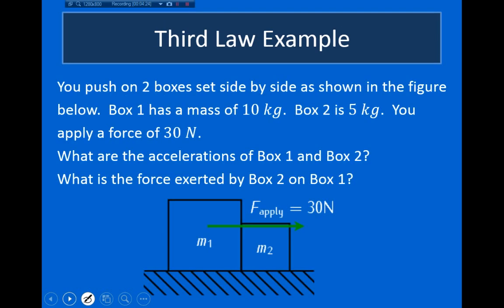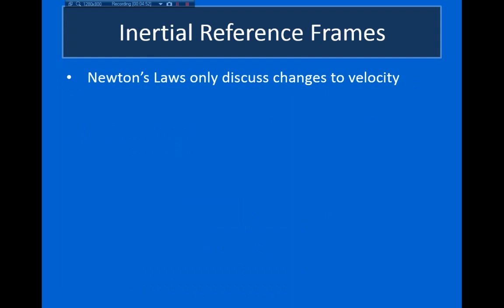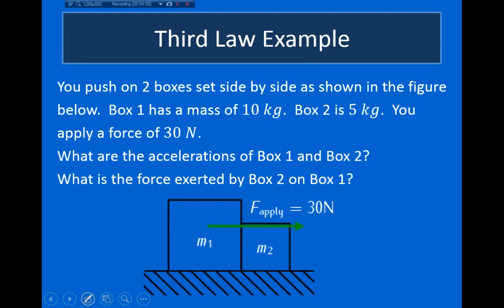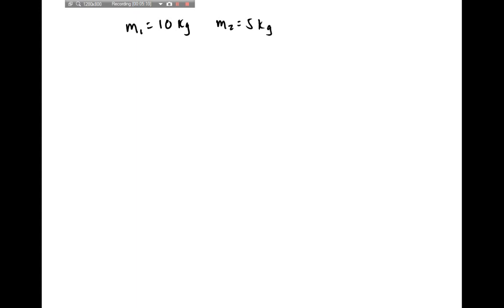Let's look at another example. You push two boxes that are set side by side. Box one has a mass of 10 kilograms and box two has a mass of 5 kilograms. You apply a force of 30 Newtons. We're asked to find the acceleration of the boxes, and also the force that box two exerts on box one.